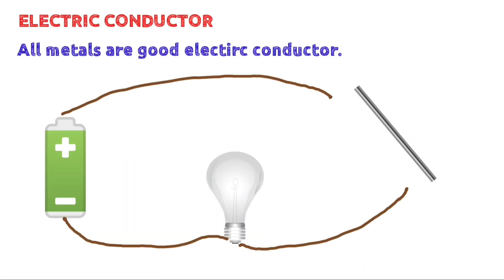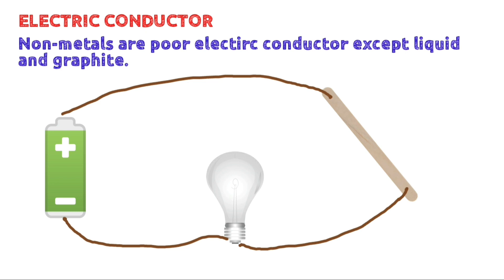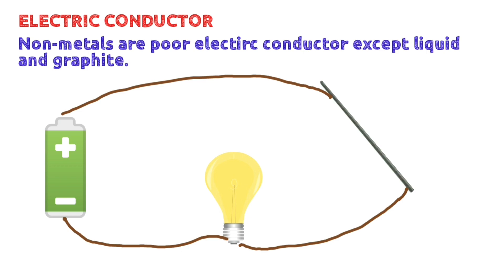Now let's learn about other important characteristics of metals and non-metals based on their usage. All metals are good electric conductors, while non-metals are bad electric conductors, except carbon in the form of graphite.